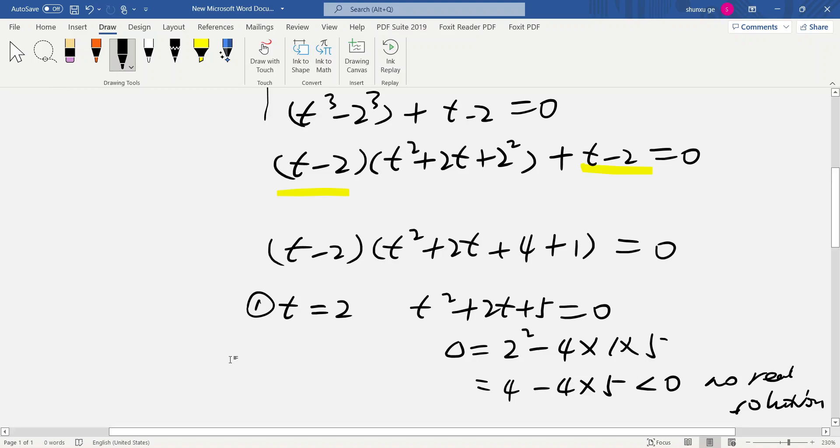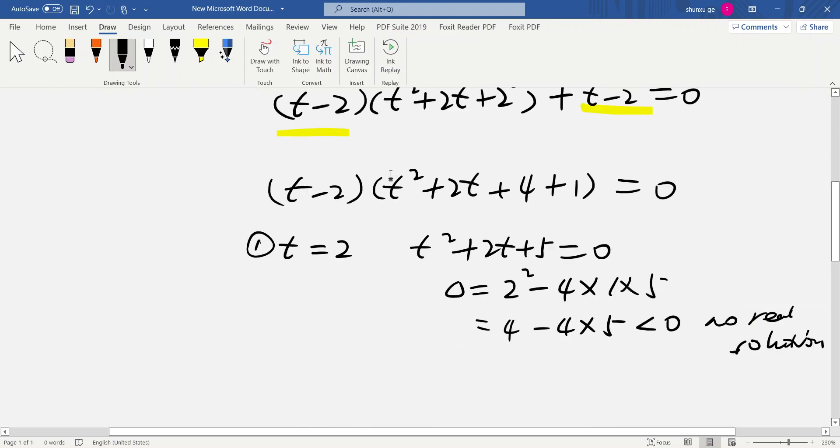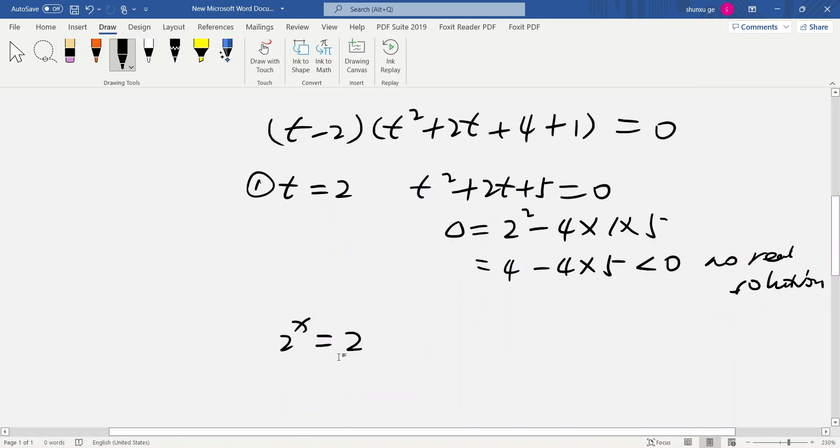Okay, t = 2. We let 2^x = t here, so 2^x = 2. That means we can write 2 as 2^1. Base is same, so exponents should be same, so x = 1. So this is the real solution: x = 1.